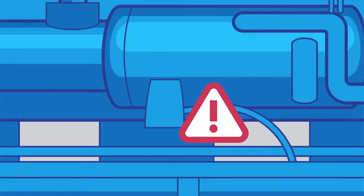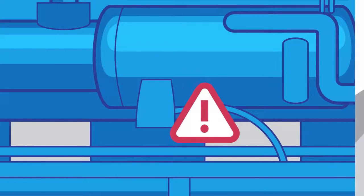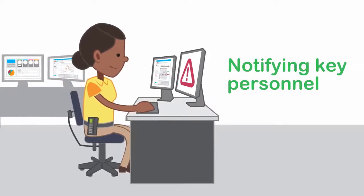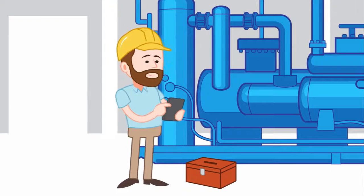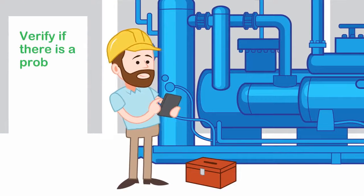When an anomaly indicates a potential problem with an asset, an early warning alert is generated that notifies key personnel, remotely or on-site, wherever they are, so they can determine whether maintenance should be dispatched to verify if there is a problem.